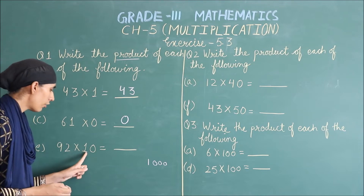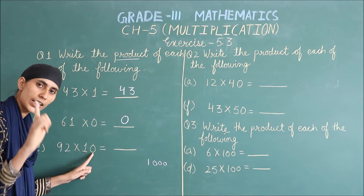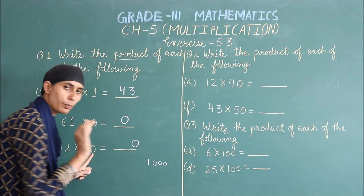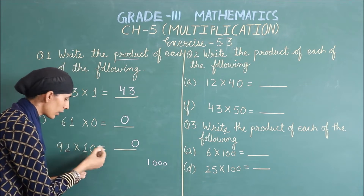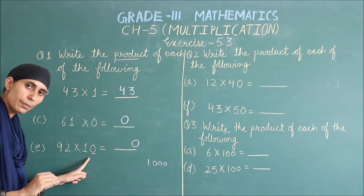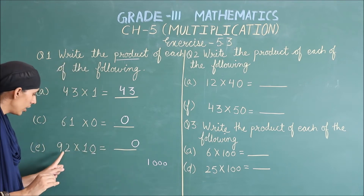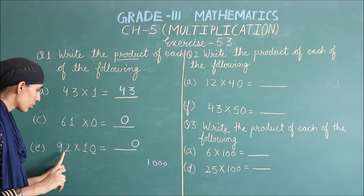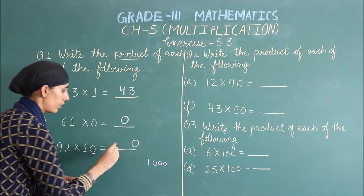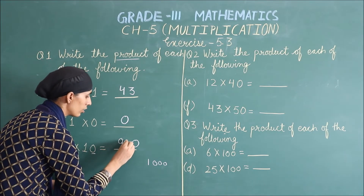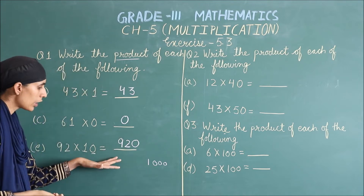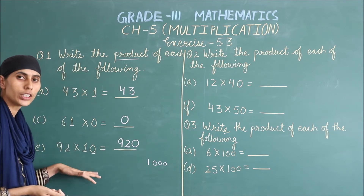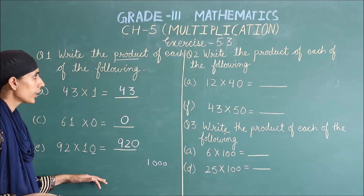آپ یہاں دیکھ سکتے ہو: 1 کے ساتھ 1 ہی 0 دیا ہے، تو میں پہلے وہ 1 ہی 0 put کروں گی۔ اب میرے پاس کیا بچا؟ 92 multiply by 1 — 92 ones are 92. اس سے آپ کی multiplication easy ہو گئی۔